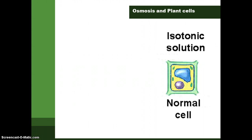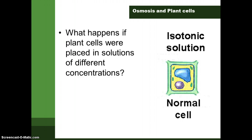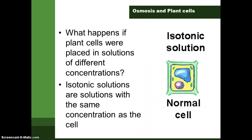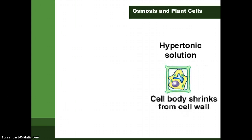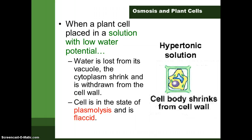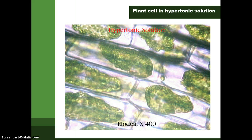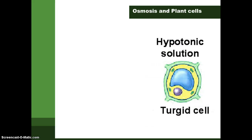In a normal cell placed in an isotonic solution — a solution that has the same concentration as the cell — there is no net movement of water molecules and no osmosis. In a hypertonic solution, which is a concentrated solution, the cell will shrink because the hypertonic solution has a lower water potential than the water potential inside the cell. Water molecules will leave the cell, and the cell becomes plasmolyzed and flaccid.